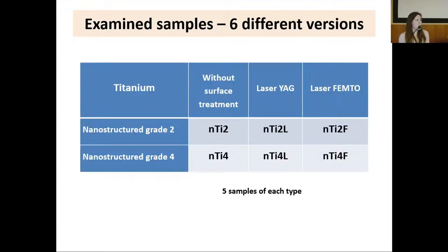To compare cell adhesion and proliferation, six different versions of implants were used: nanostructured titanium grade 2 and nanostructured titanium grade 4, each with three different surface conditions — without surface treatment, with Nd:YAG laser treatment, and with femtosecond laser treatment. We have five samples of each type.